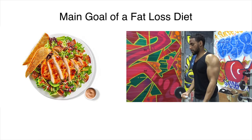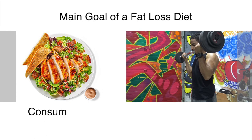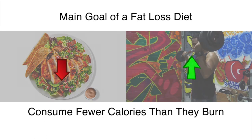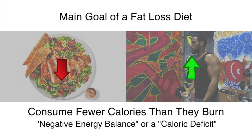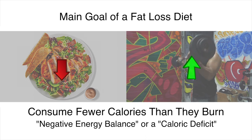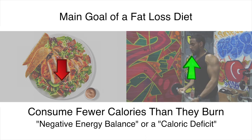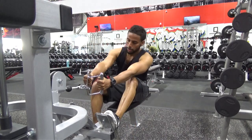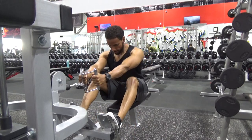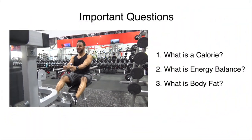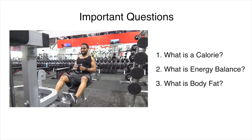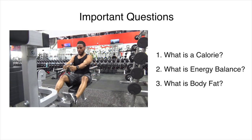The main goal of a fat loss diet is to have the dieter consume fewer calories than they burn. This is referred to as a negative energy balance or a caloric deficit. To better understand what these terms mean, we're going to quickly answer three main questions: what is a calorie, what is energy balance, and what is body fat?